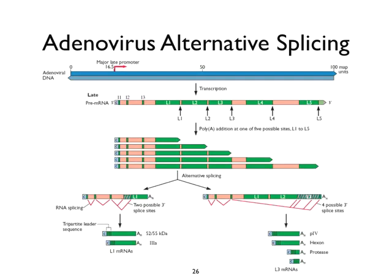Looking in more detail at adenovirus: here's the major late transcript and five different potential coding regions. You can see they are generated from this transcript by the splice donor at the end of this sequence joining an acceptor somewhere downstream to generate L1, L2, L3, and so on. Depending upon where the splices occur, you get different families of RNA. Sometimes splices occur within genes, giving different proteins that may be collinear and then diverge over portions of that message — we'll show an example of that when we talk about E1A.